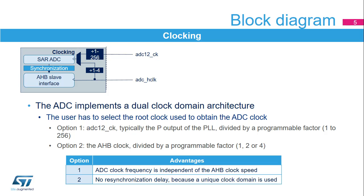The ADC has two clock inputs, ADC-12CK and ADC-HCLK. The AHB interface belongs to the ADC-HCLK clock domain. Regarding the digital part of the SAR-ADC, there are two options: either using ADC-HCLK as the reference clock or using ADC-12CK, which is dedicated and independent of ADC-HCLK. With this second option, dynamic frequency scaling can be implemented in the AHB and CPU clock domain, while the sampling clock is fixed. However, samples acquired in the ADC-12CK clock domain have to pass to the AHB clock domain to be read by CPU or DMA, which requires a synchronization delay.